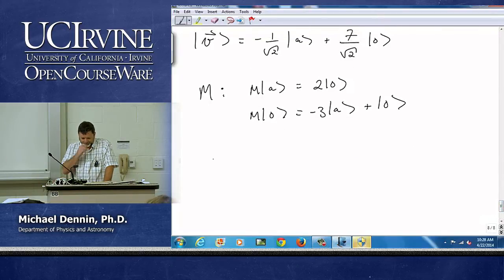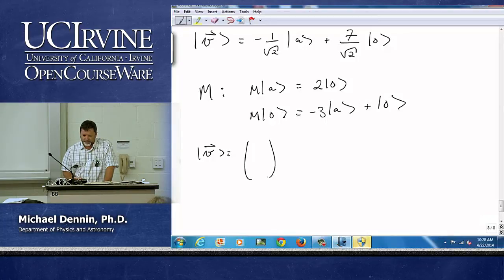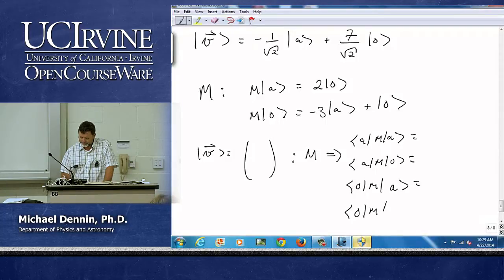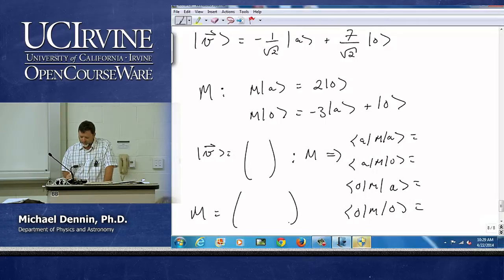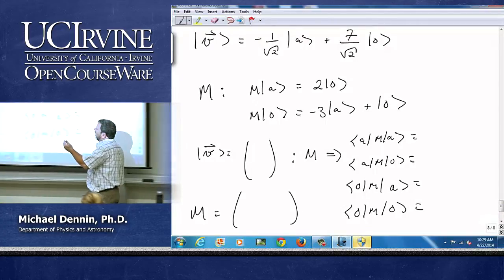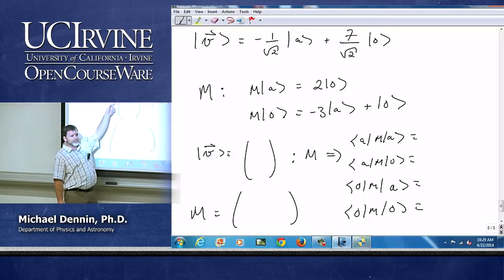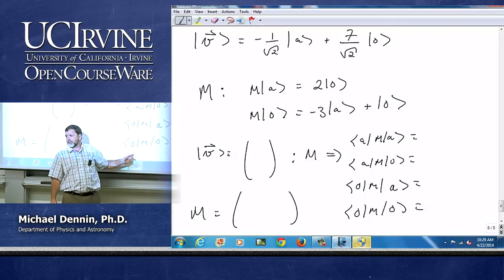And we're going to take M acting on A gives us 2 oranges. And M acting on O gives us negative 3 apples plus 1 orange. So what I'd like you to do is let's write V as a column vector and M as a matrix. And I actually want you for practice to briefly, quickly go through computing your matrix elements.